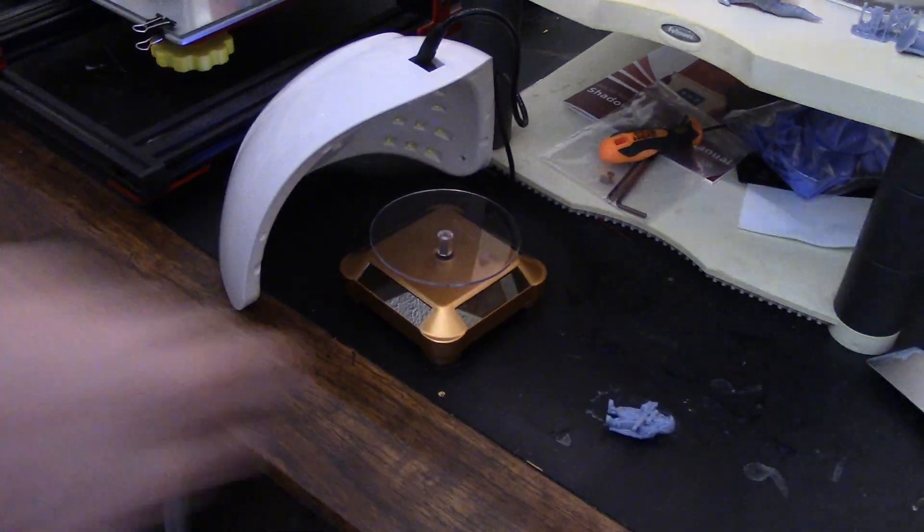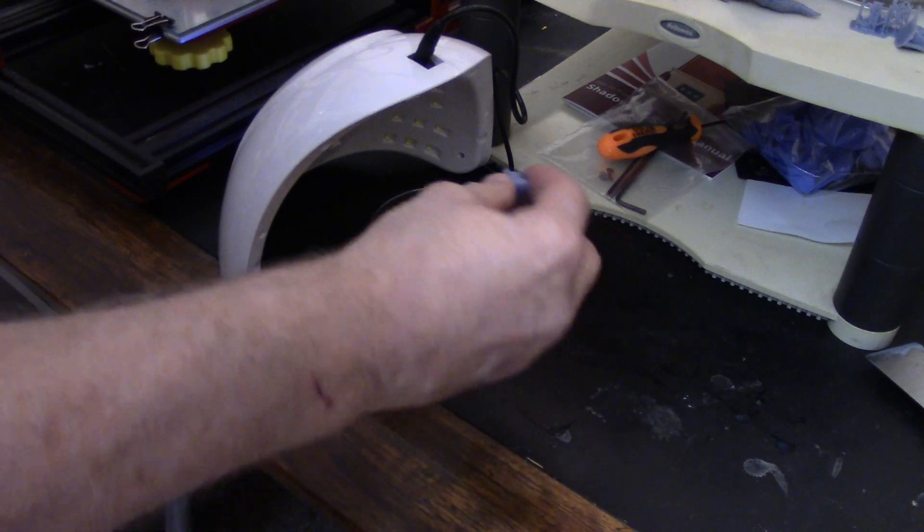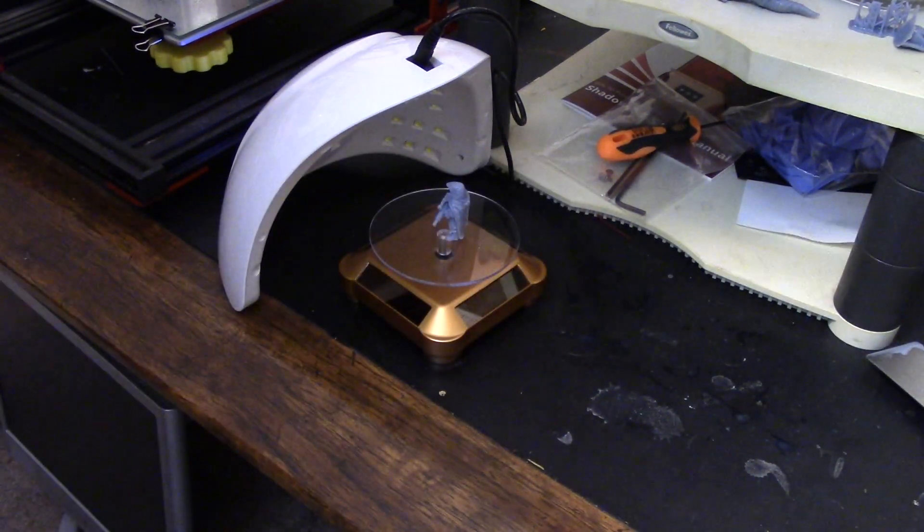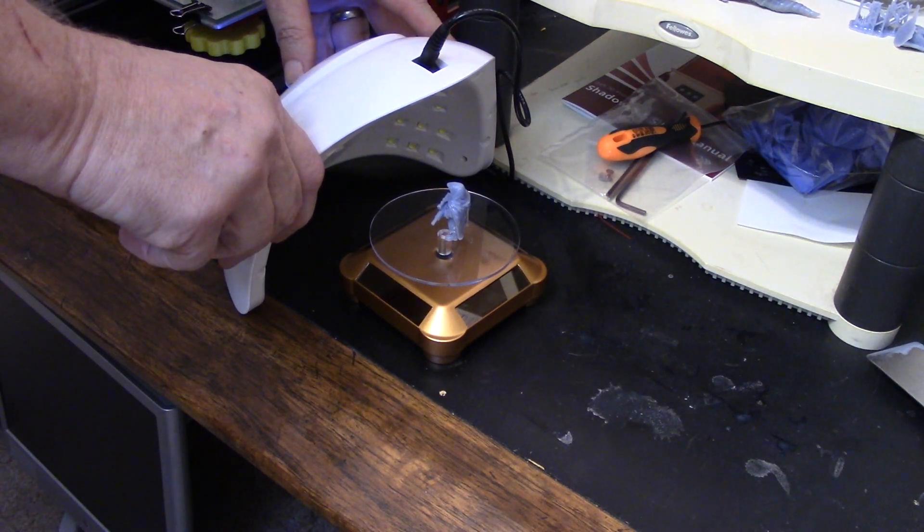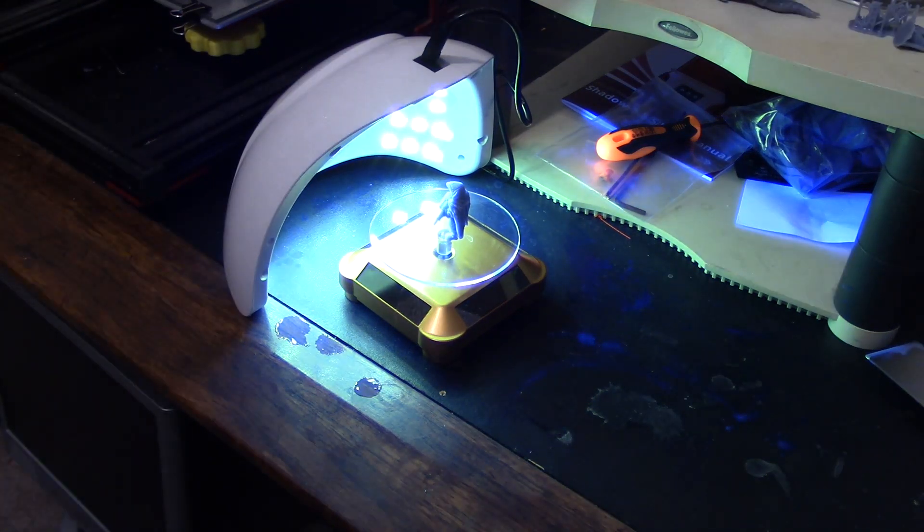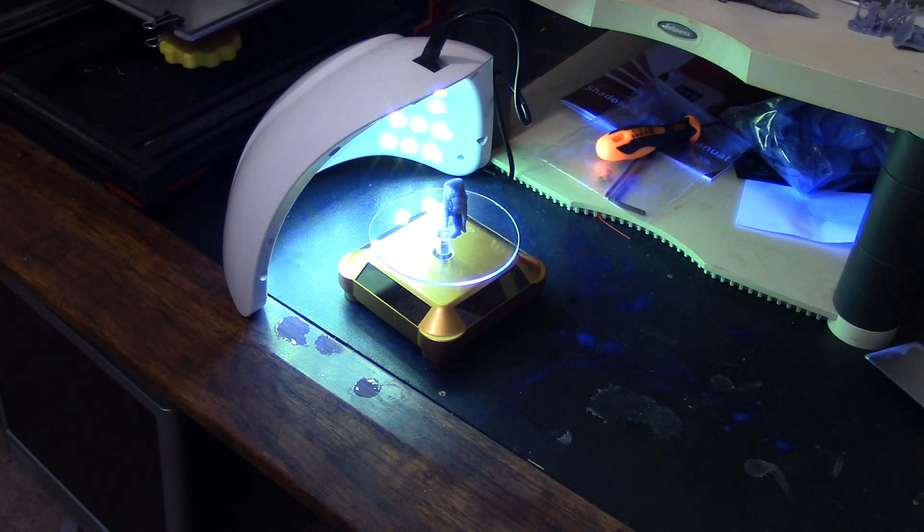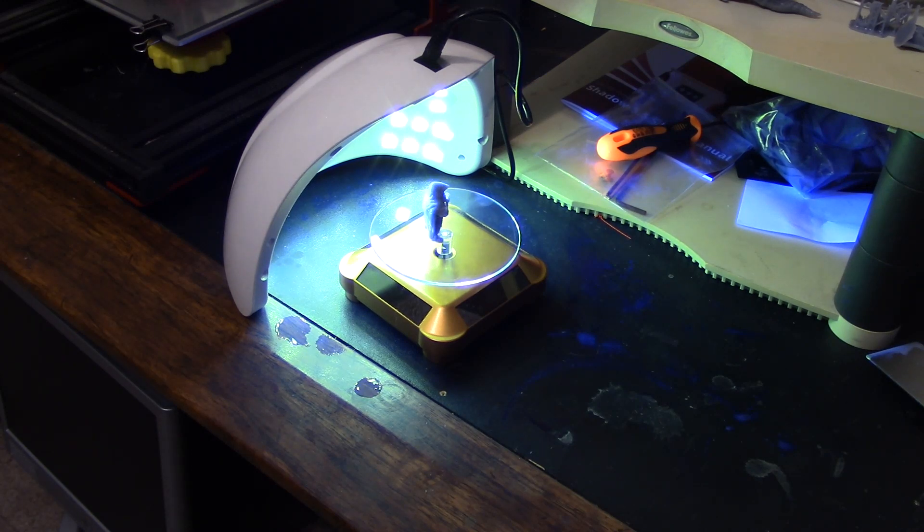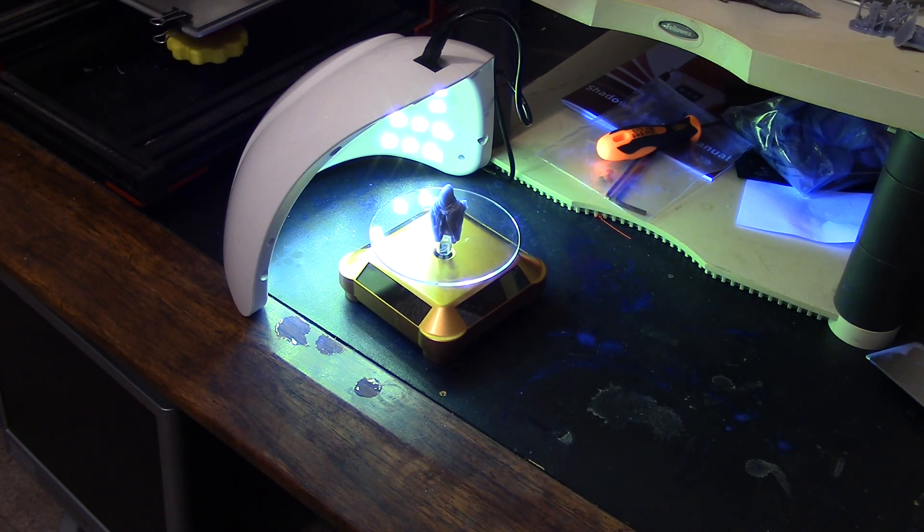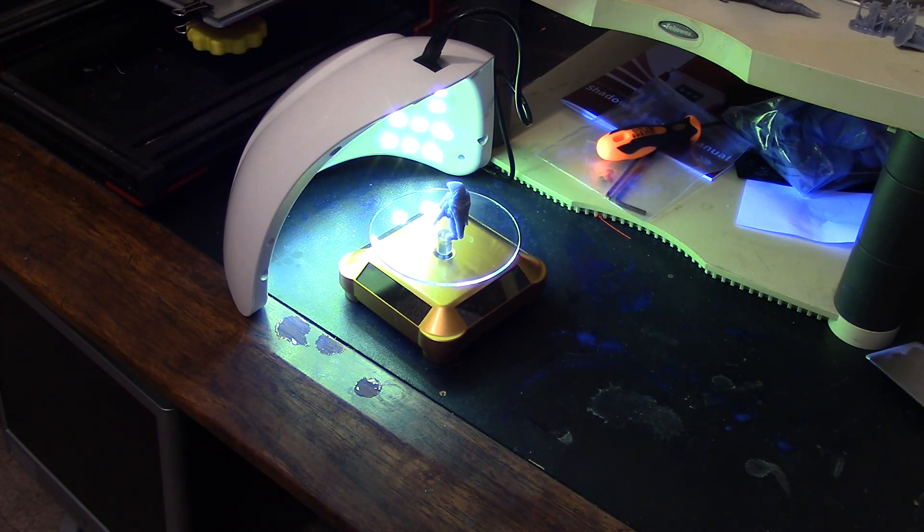But you put your thing you want to cure on there, and you give it some time. And I'm going to give it, let's do 30 seconds. And as soon as the UV hits the solar panels, it starts to turn. And it cures them pretty darn quick.